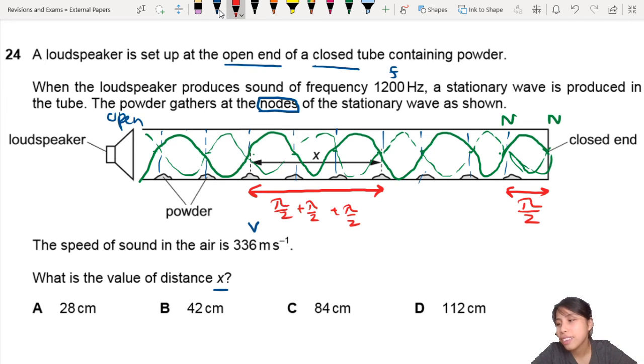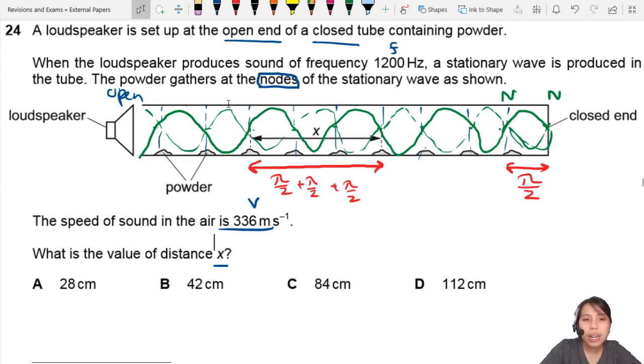So can we find what that length is? First thing, we need to find what lambda is. So let's do that. How do we find lambda? We have the speed of sound, we have the frequency. So v equals f lambda.